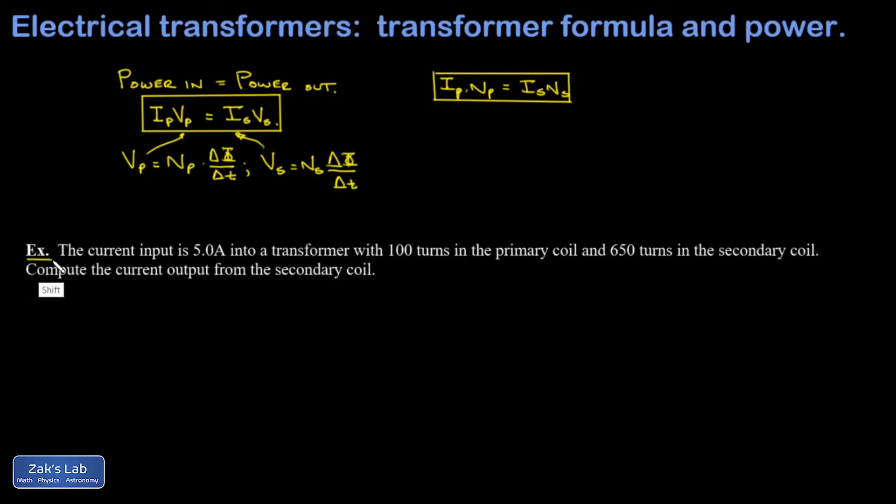And here's a quick example just to wrap things up. I have a current input of 5 amps into a transformer with 100 turns in the primary, 650 in the secondary. And I want to know what the output current must be. So if I just take this last formula in the box and solve it for the secondary current, I'll plug in my number of turns in the primary, secondary, input current. And this comes out to 0.77 amps.